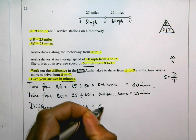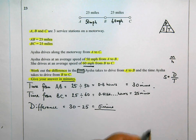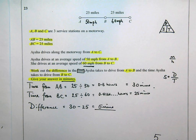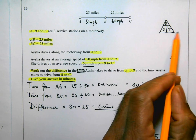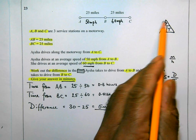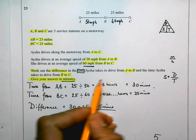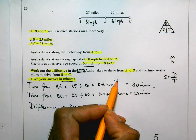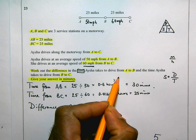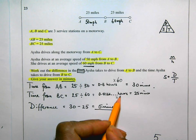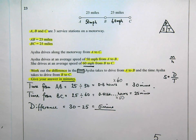The answer is 5 minutes, which I'll write in the answer space. This question is pretty straightforward, but there are a couple of things to remember: you need to know the speed-distance-time equation and the triangle. Also remember that to turn hours into minutes, you multiply by 60. Make sure you review this a couple of times until you understand it completely and can do it yourself.